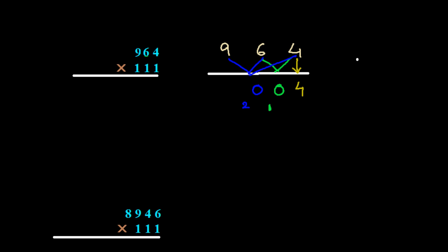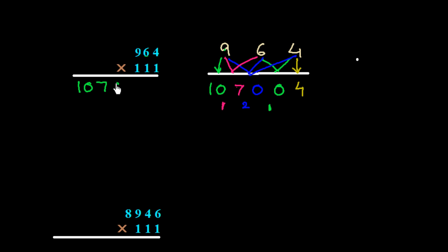Next, 9 plus 1 carry is 10, so we write 10. Then the leading single digit with carry gives 10 again. So the result of 964 × 111 is 1, 0, 7, 0, 0, 4 — that is 107,004.